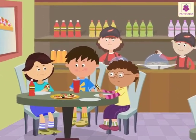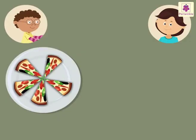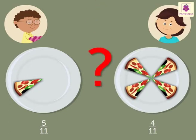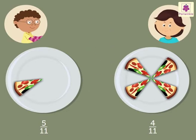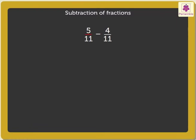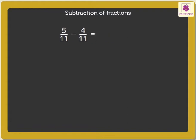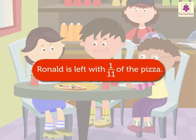Look, now Pearl and Ronald are having pizza. Ronald had five-eleventh of the pizza. Pearl ate four-eleventh of it. How much pizza is left with Ronald? Here, we have to subtract the fractions 5 upon 11 and 4 upon 11. As these are like fractions, we subtract only the numerators. Therefore, 5 upon 11 minus 4 upon 11 is equal to 5 minus 4 upon 11, which is equal to 1 upon 11. Thus, Ronald is left with one-eleventh of the pizza.